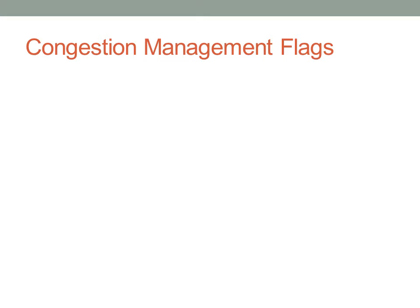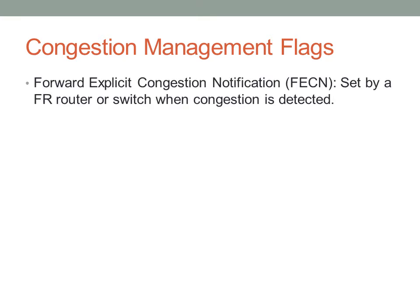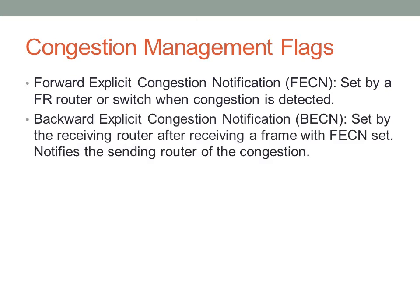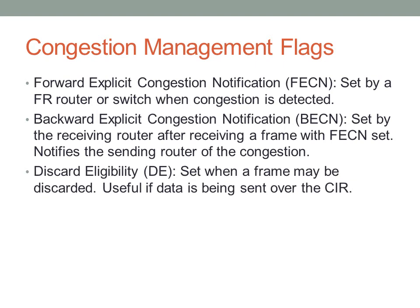Frame Relay has a way to deal with internal service provider congestion using the FECN and BECN flags. The FECN, or Forward Explicit Congestion Notification, is set by a Frame Relay router or switch once it detects congestion on the link. On the way back, the receiving router sets the BECN bit, notifying the sending router of congestion so it can load balance or accommodate accordingly. There's also a Discard Eligibility bit — useful for voice or burst traffic where you're okay with the service provider discarding the data if necessary.